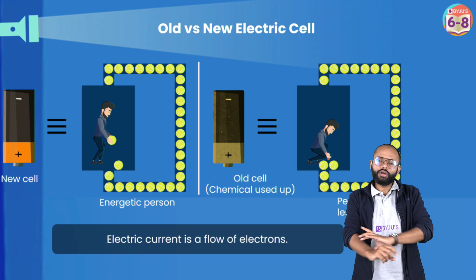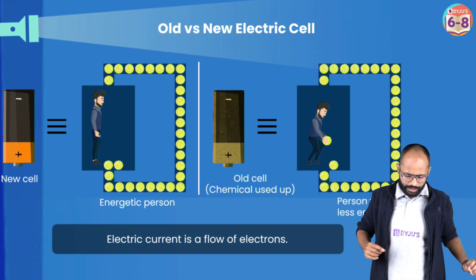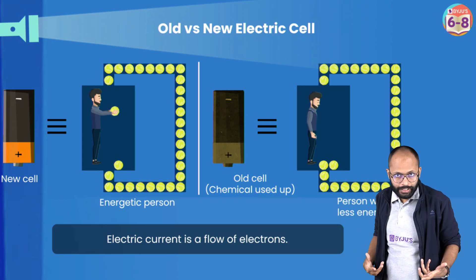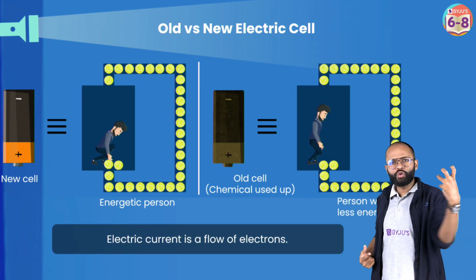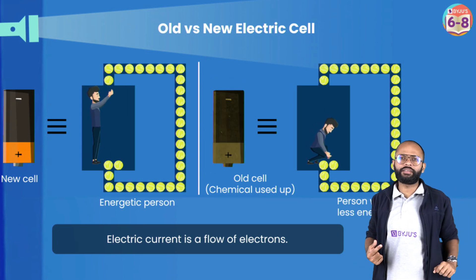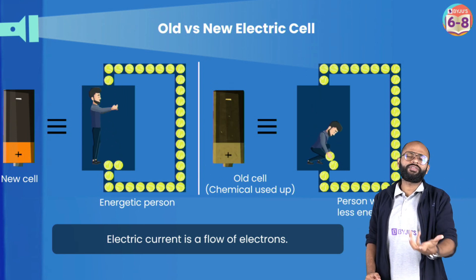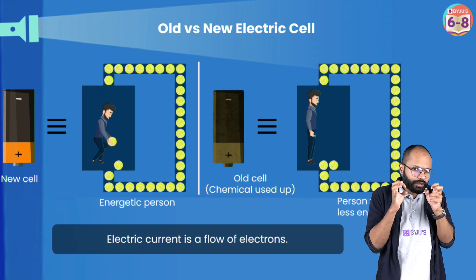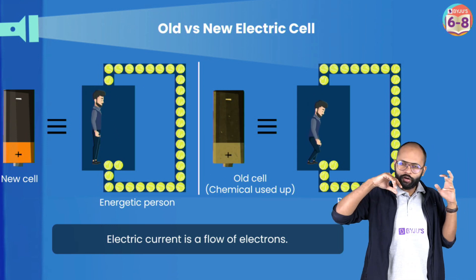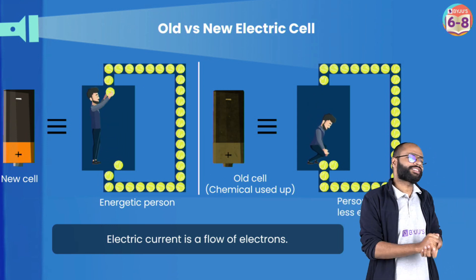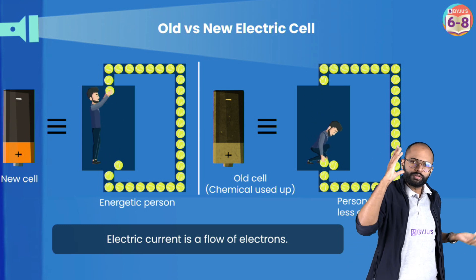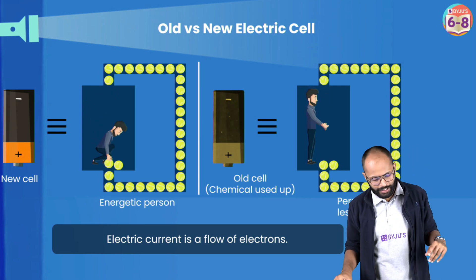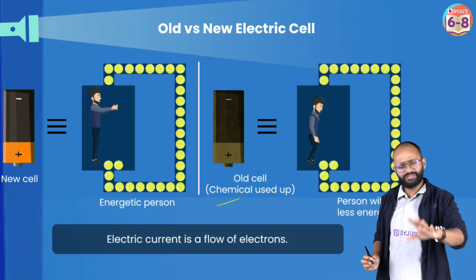Every electric cell has two terminals — one is positive at one end and negative at the other end. The metal cap is the positive end and the flat disc side is the negative end. Now, old cell versus new cell: the cell converts chemical energy to electrical energy. An old cell has used up all its chemicals and cannot provide more energy, while a new cell is fully charged and ready to give electrical energy.